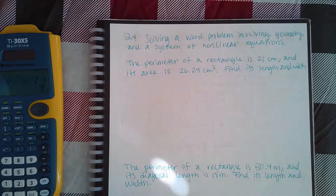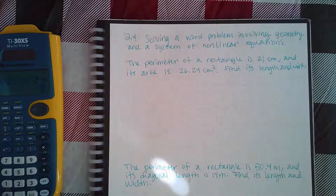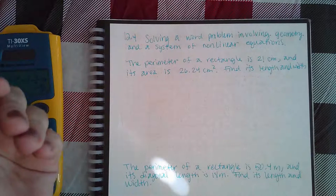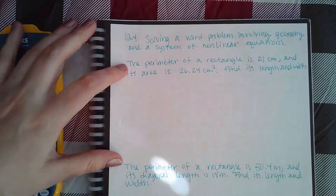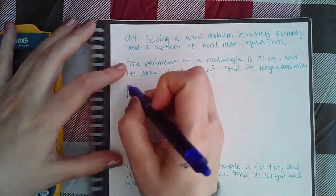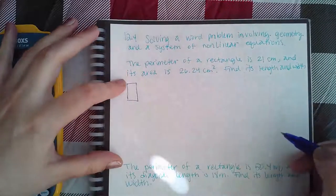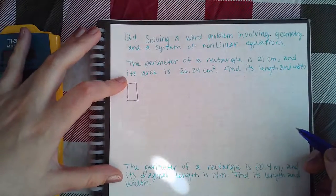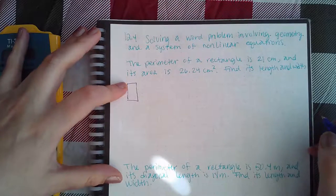Here we have 12.4, solving a word problem involving geometry and a system of nonlinear equations. The perimeter of a rectangle is 21 centimeters and its area is 26.24 centimeters. Find the length and the width.